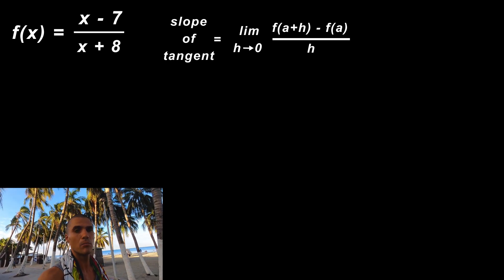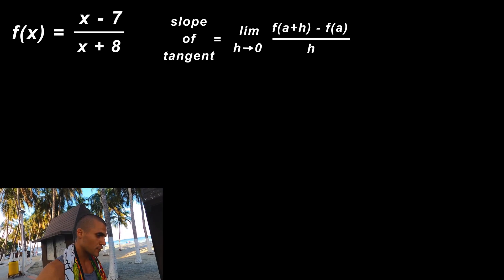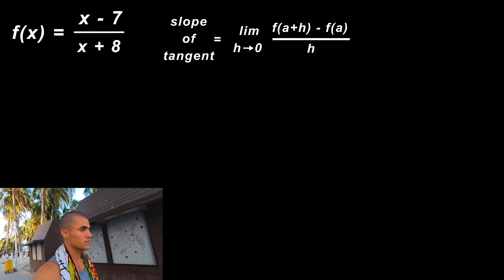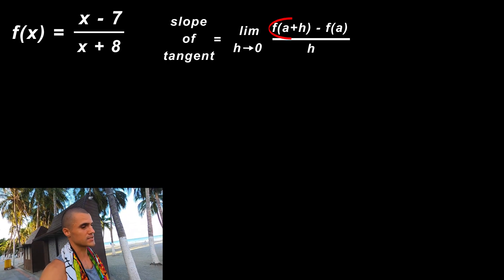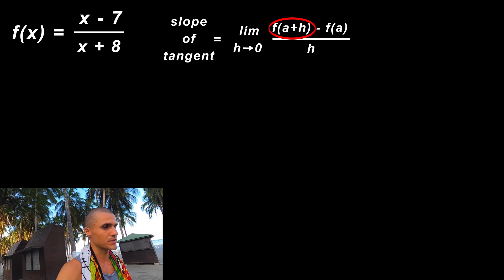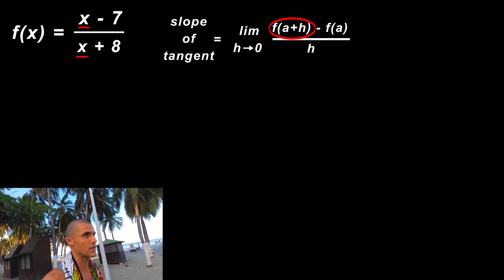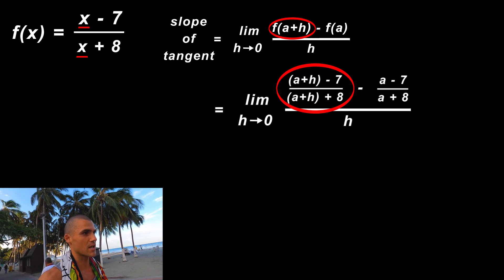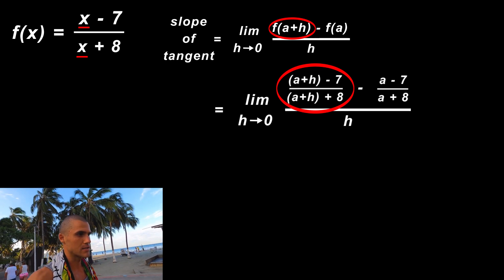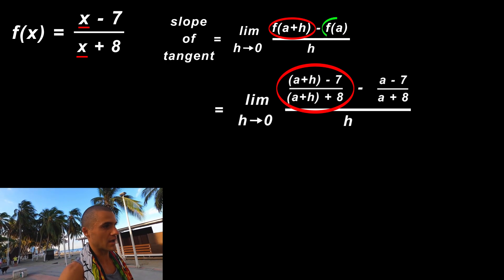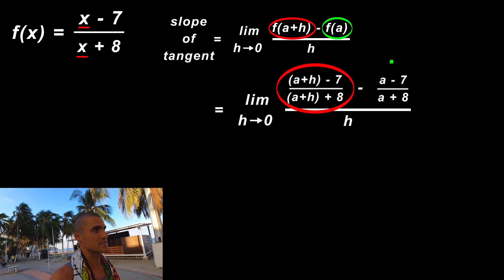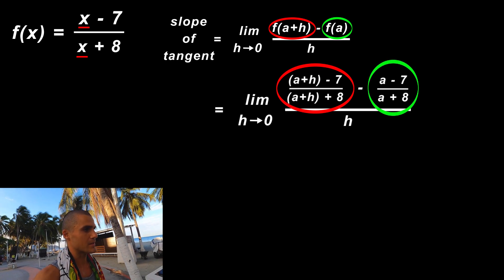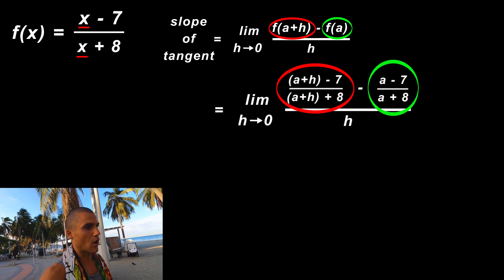For the first part of the difference quotient, the f(a+h), we just plug in (a+h) for all the x values, so we'd end up with [(a+h) - 7]/[(a+h) + 8] minus f(a), so (a - 7)/(a + 8), and then all of that is going to be over h.